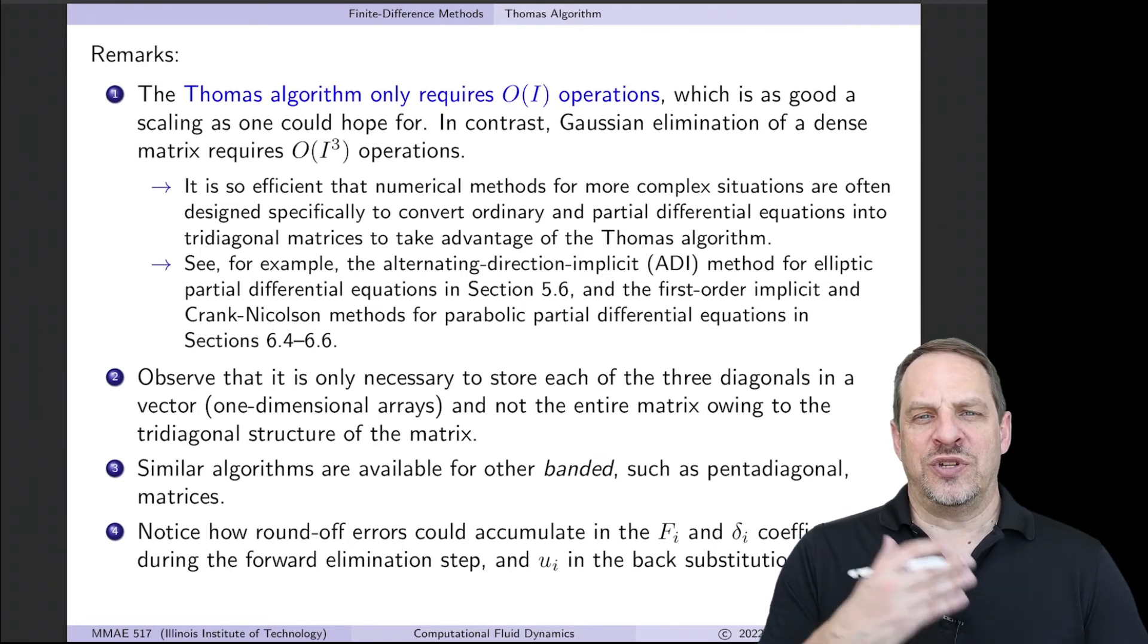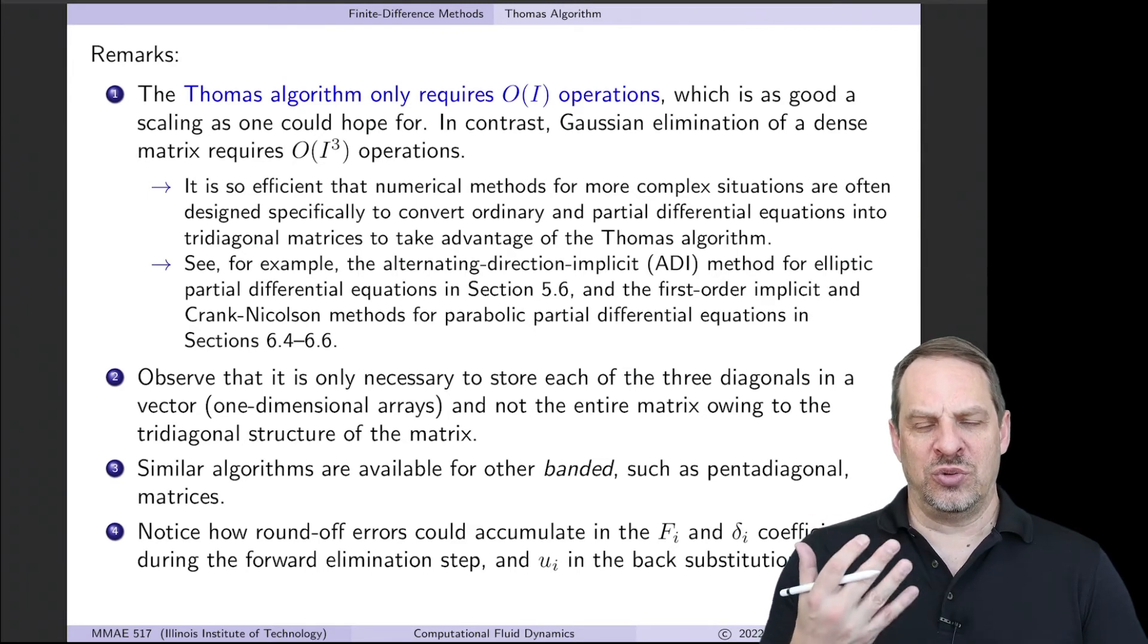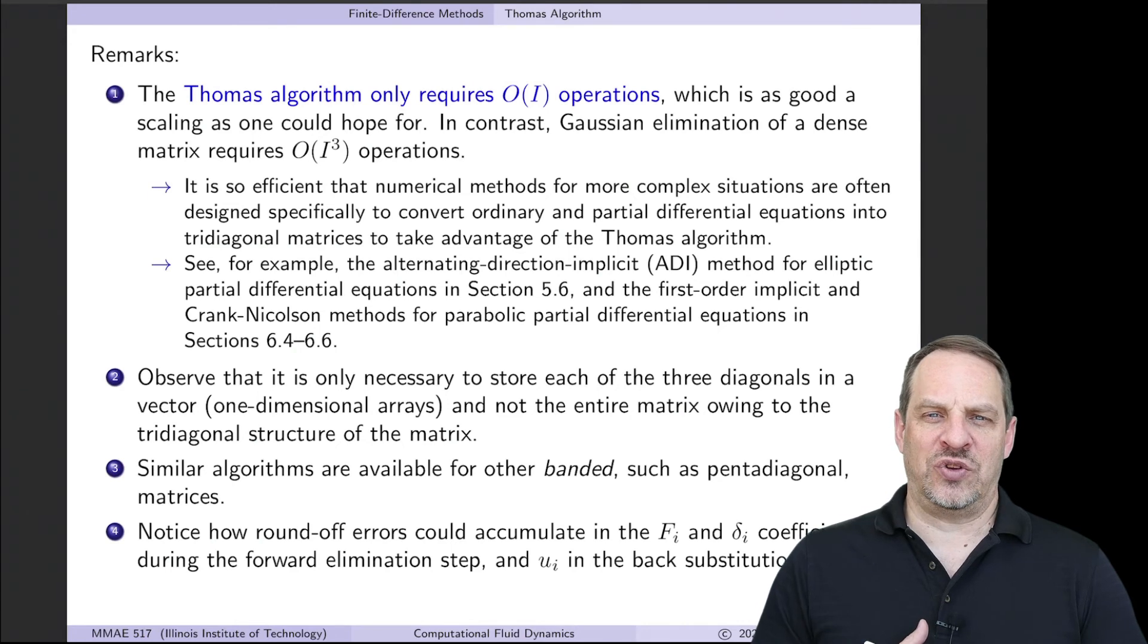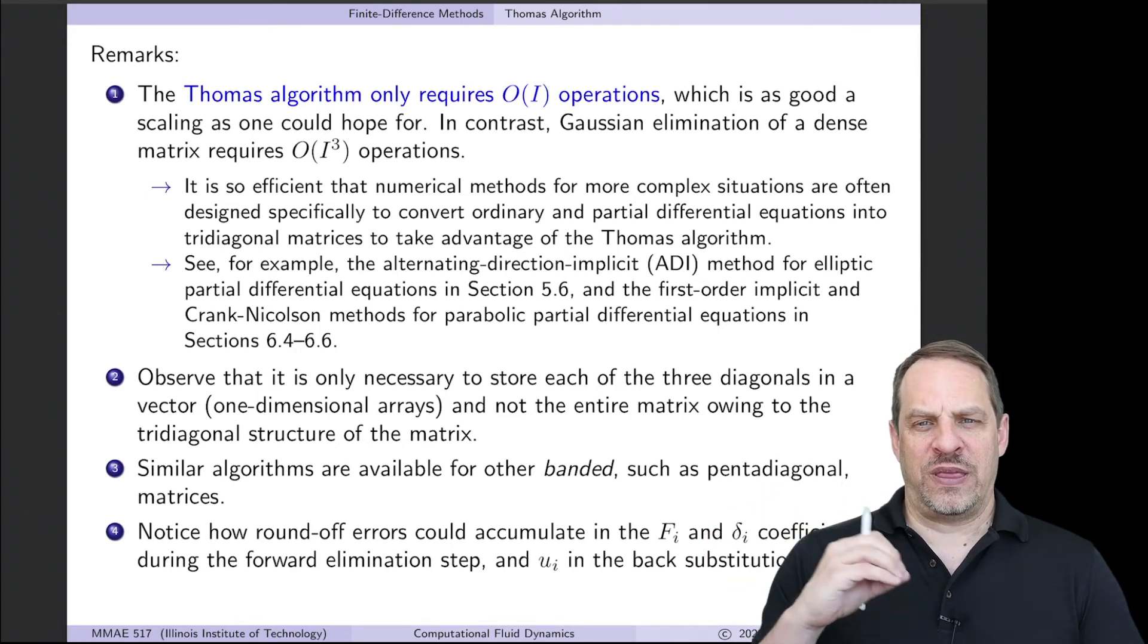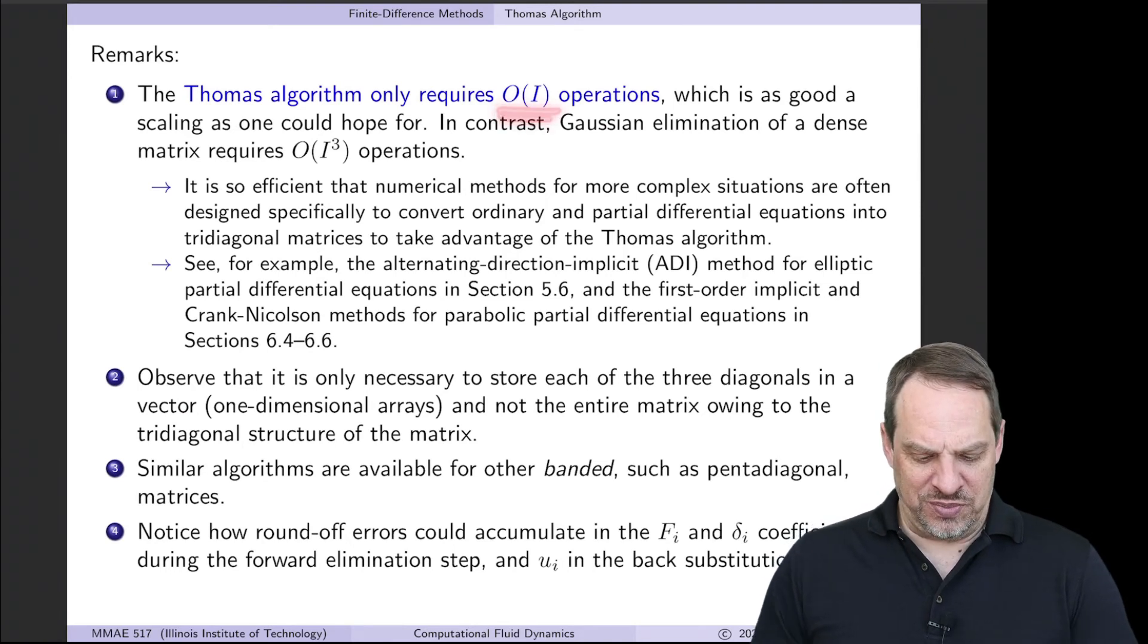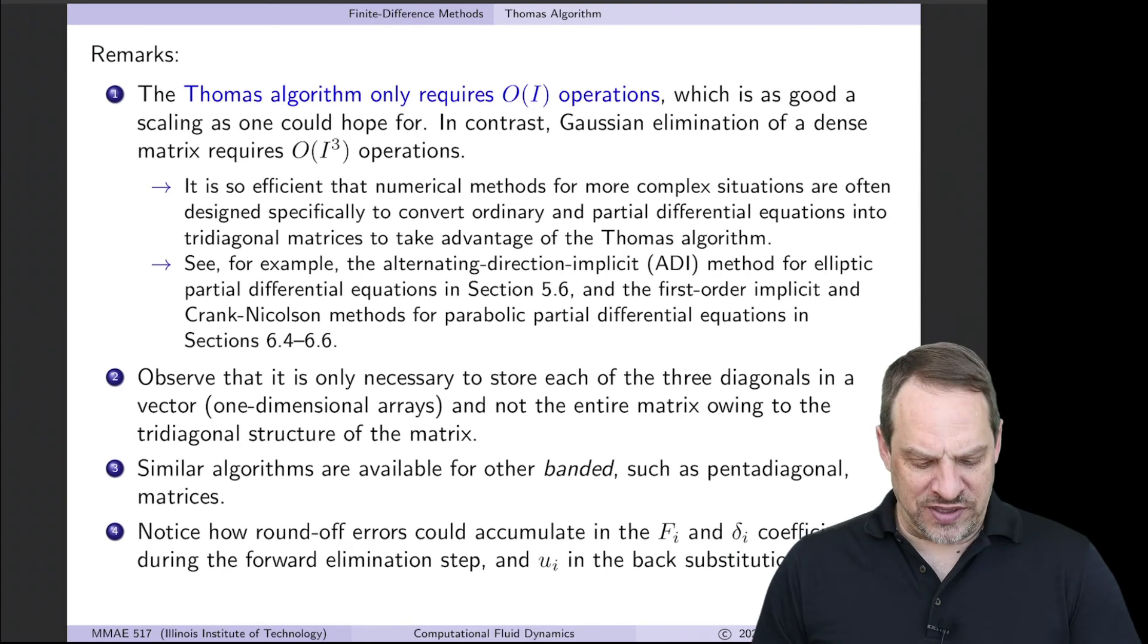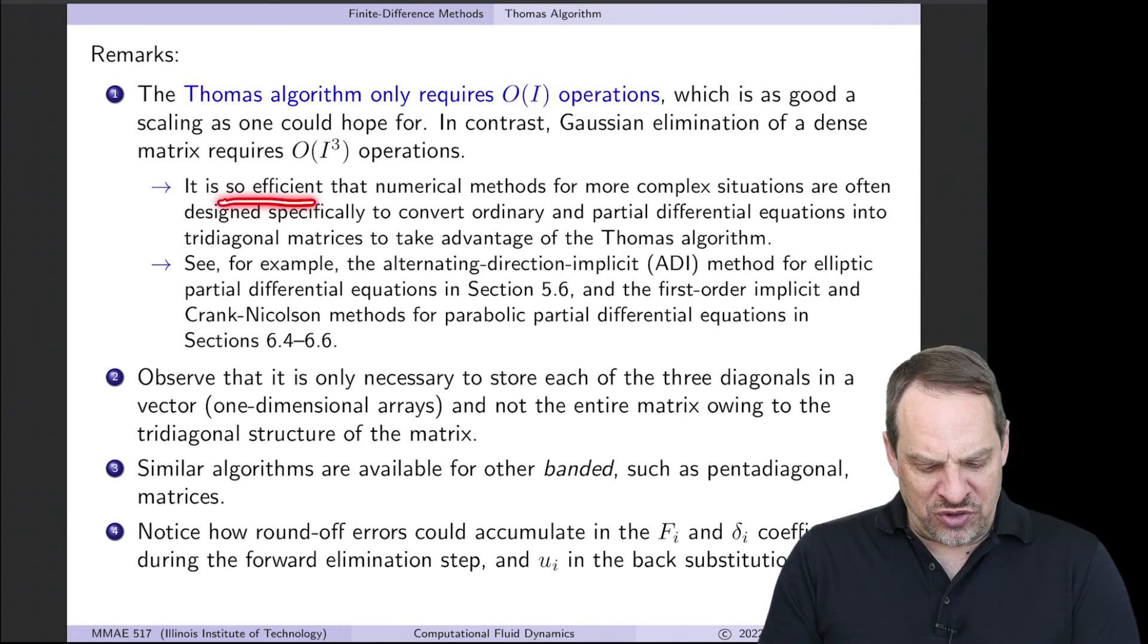So N cubed is a very poor scaling. N or I is optimal linear scaling. So in other words, you really can't do any better than the Thomas algorithm in terms of the number of operations and how that scales with the size of the problem. I mentioned at the outset of the video that the Thomas algorithm is so efficient that in the future, even when we have more complicated problems to solve,